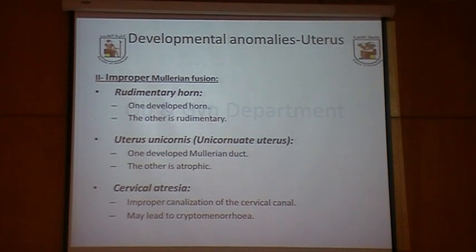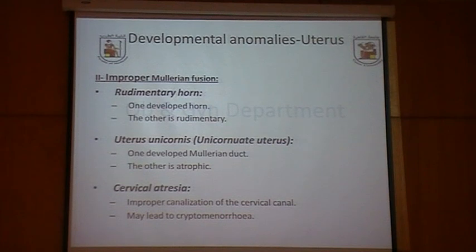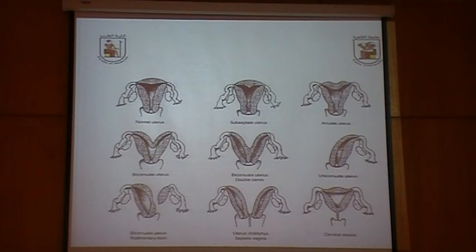Sometimes there is failure of formation of one horn, resulting in a rudimentary horn with normal development on one side — this is a unicornuate uterus, where only one Müllerian duct developed and the other is atrophic. Here you can see the American Fertility Society classification of various Müllerian abnormalities.